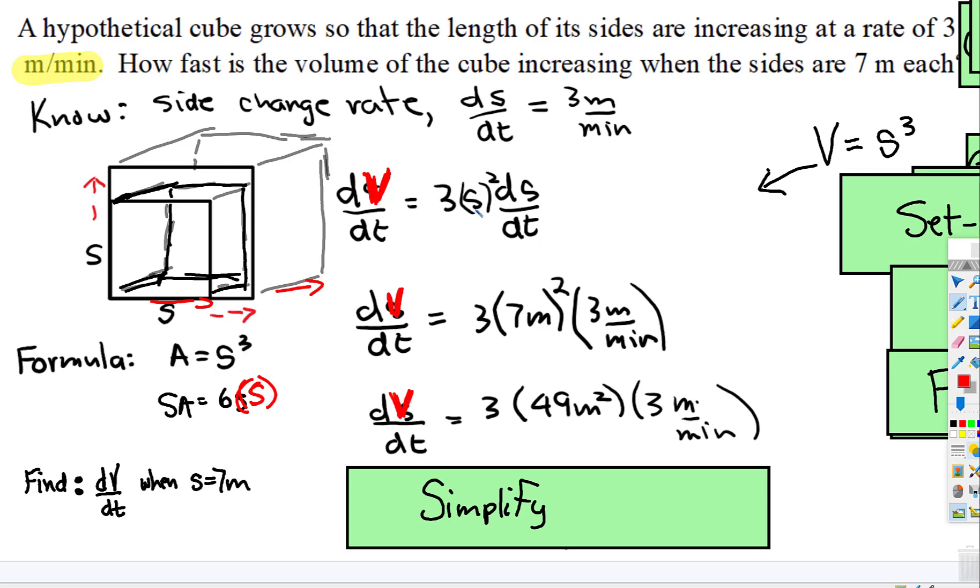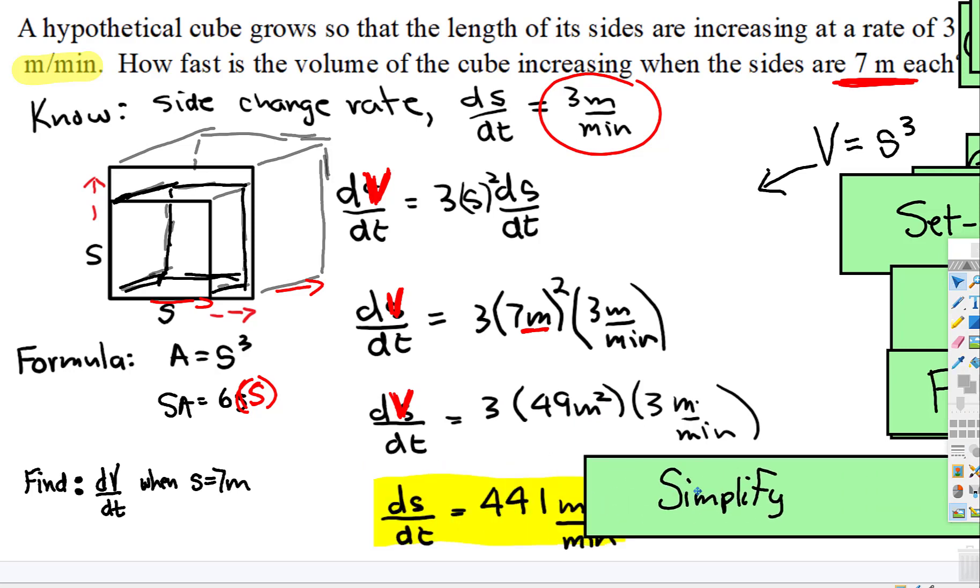So we know the side length at the exact moment that the side is seven meters, so we plug that in, and the formula is side squared, so seven meters squared, ds/dt is three meters per minute.